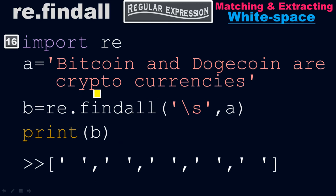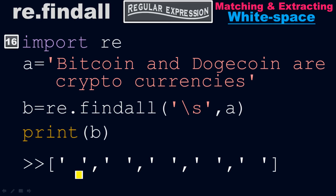Backslash-s (\s) returns all the white spaces from a. In the string 'bitcoin and dogecoin are cryptocurrencies', there are white spaces at five places: one, two, three, four, and five. Therefore the output contains five white spaces — the regular expression extracts only the white spaces from the string.